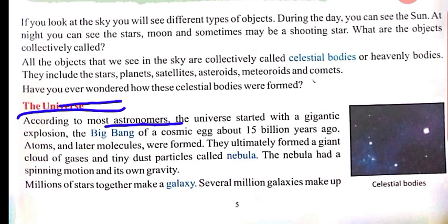Atoms and later molecules were formed — pehle paramaanu aur baad mein anu bane. They ultimately formed a giant cloud of gases and tiny dust particles called nebula. Aur antataḥ unho ne milkar ek vishal baadal banaya — gases ka aur tiny dust, bahut hi suksham dhool ke kano ka — jise hum Nebula kehte hain. Nebula ki apni khud ki spinning motion hoti hai aur uska apna gravity bhi hota hai.